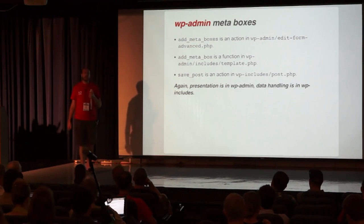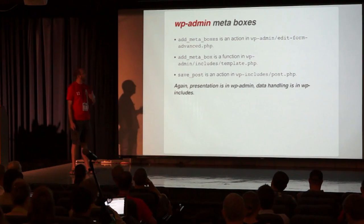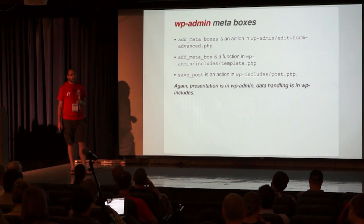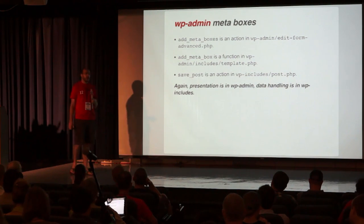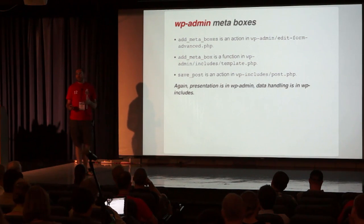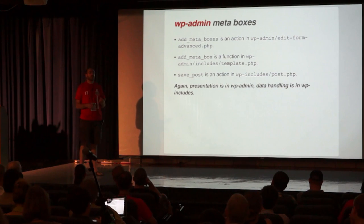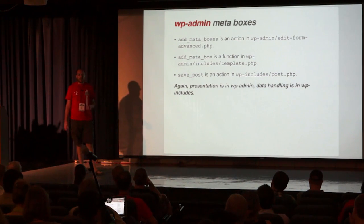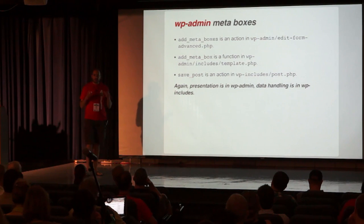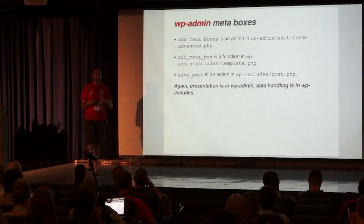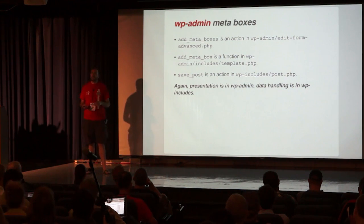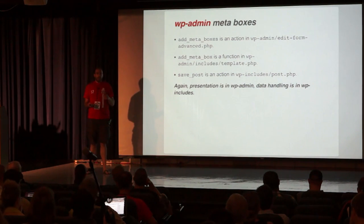Another great example, which comes up on the WP Hackers mailing list and in support forums often: people try to use some of the internal WordPress functions in places they don't belong. One that seems to come up a lot is functions around meta boxes. Meta boxes are — when you're in the post editor, you have the editor itself, and then down below you've got a meta box that lists out the comments or the comment counts, things like that.